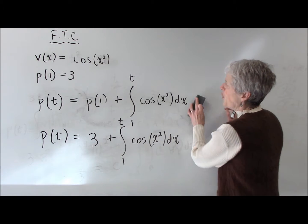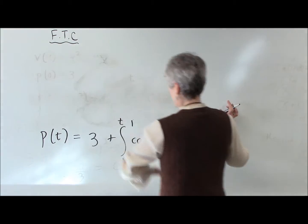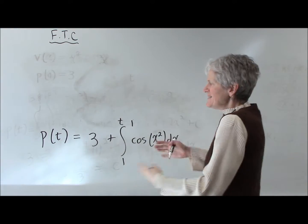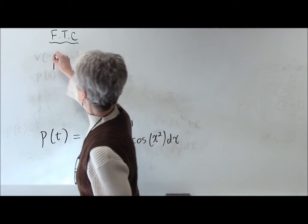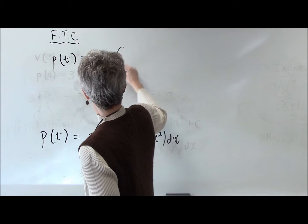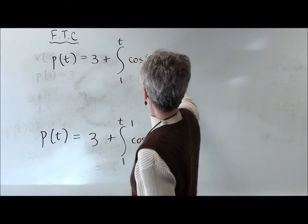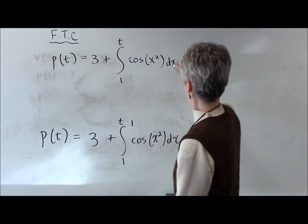Now, once I have a function, I can use the Fundamental Theorem of Calculus, part 2, to analyze that function. Let's just rewrite that function up here: p of t equals 3 plus the integral from 1 to t, cosine of x squared dx.